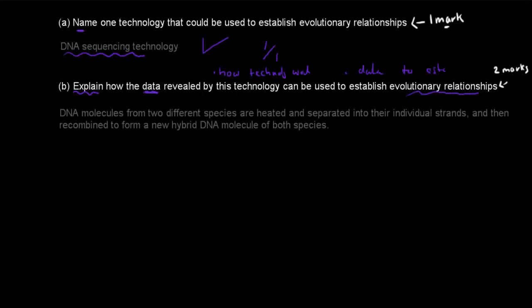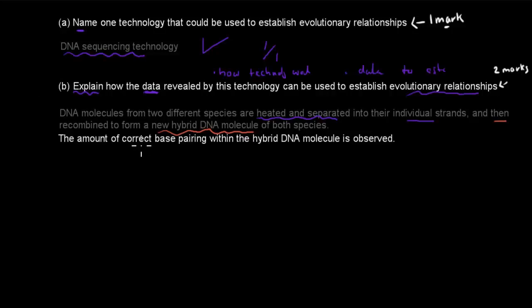And so the first part I did was I wrote DNA molecules from two different species are heated and separated into their individual strands. Then recombine to form a new hybrid DNA molecule of both species. This is the first part, just a quick description of what's actually happening. So what we've done is we've just made this hybrid. And then what I wrote is the amount of correct base pairing within the hybrid DNA molecule is observed. So this is our actual data. This is what we're looking at. Our data is how much correct base pairing there is within the hybrid DNA molecule. So these two together would get you a mark.